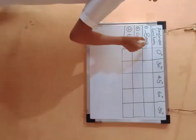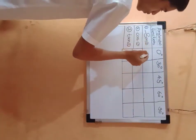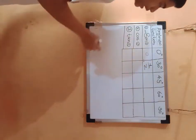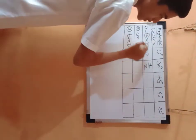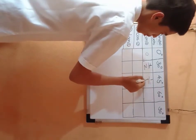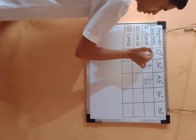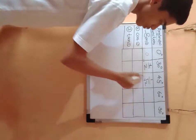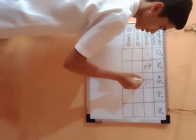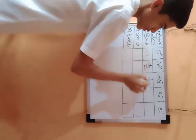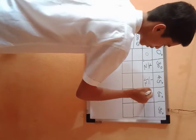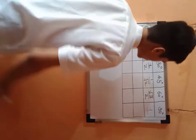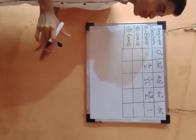So sin of 0° is 0, sin of 30° is 1/2, and sin of 45° is 1/√2. Sin of 60° is √3/2, and sin of 90° is 1. In this video lecture I will give you some tricks.